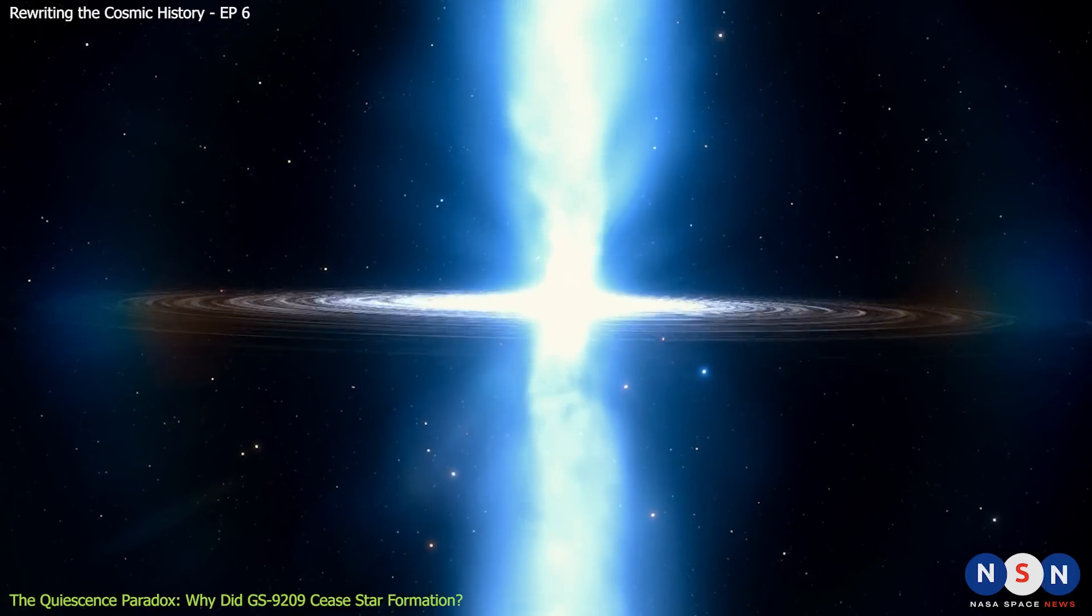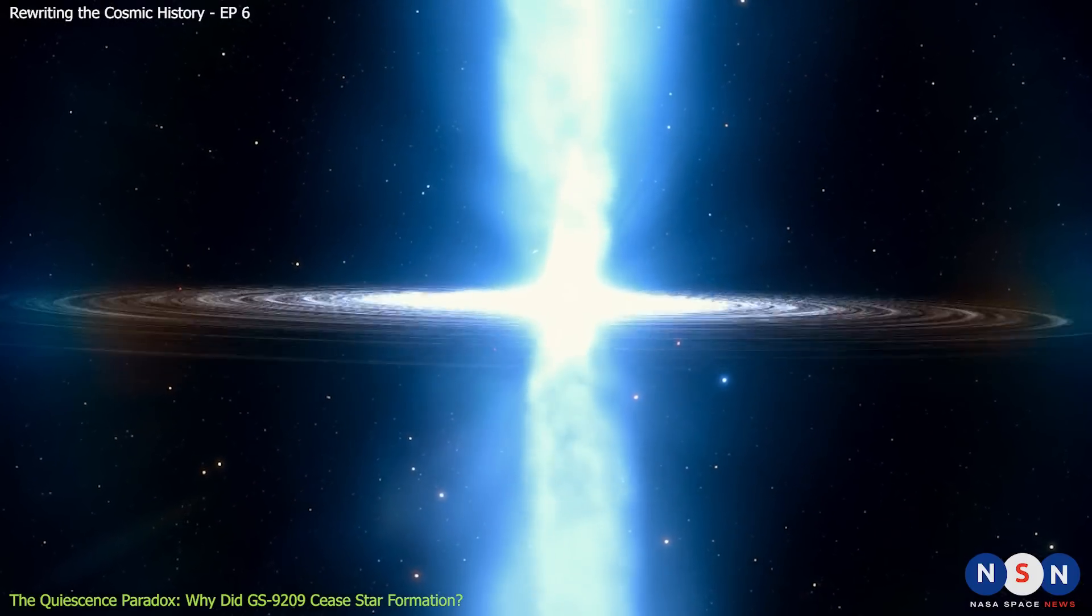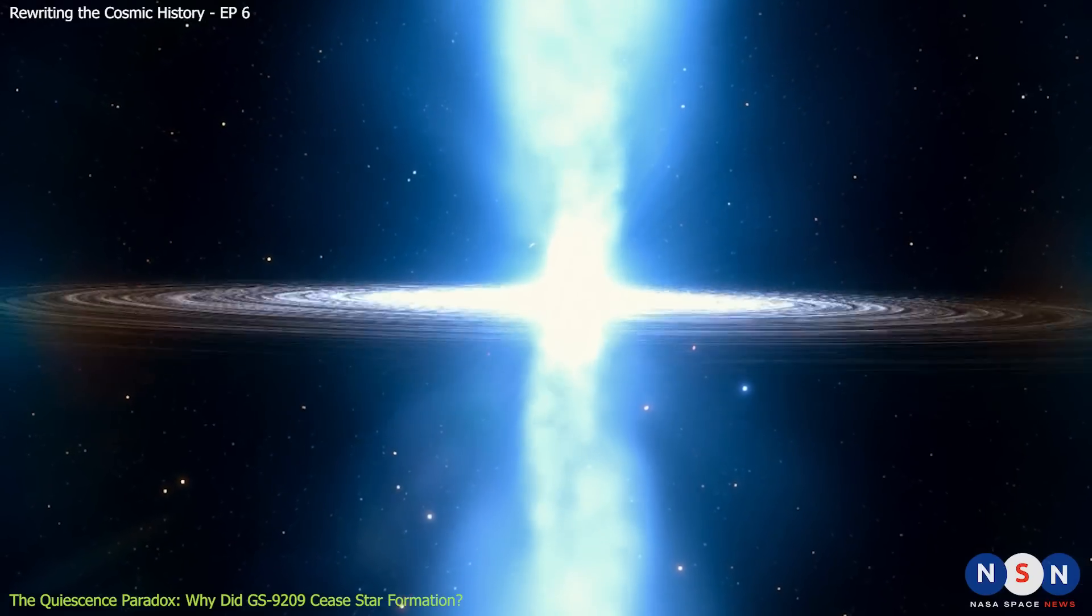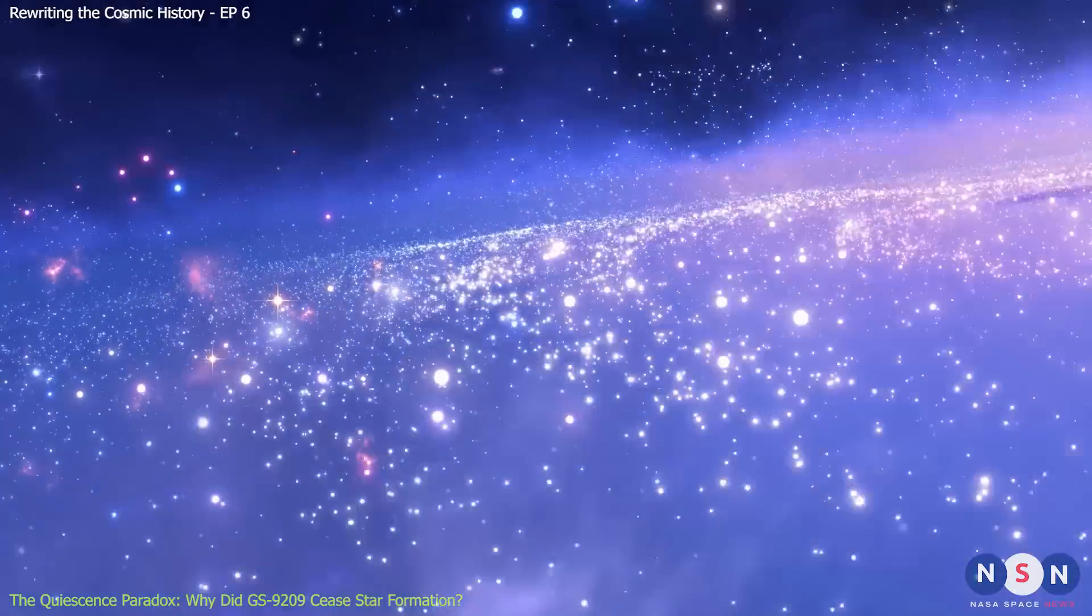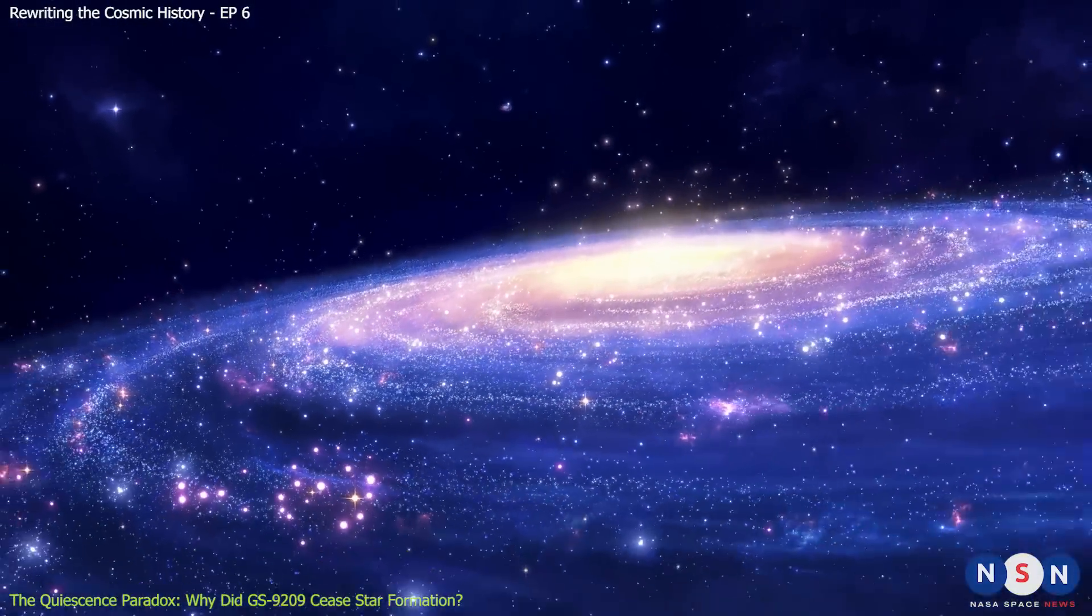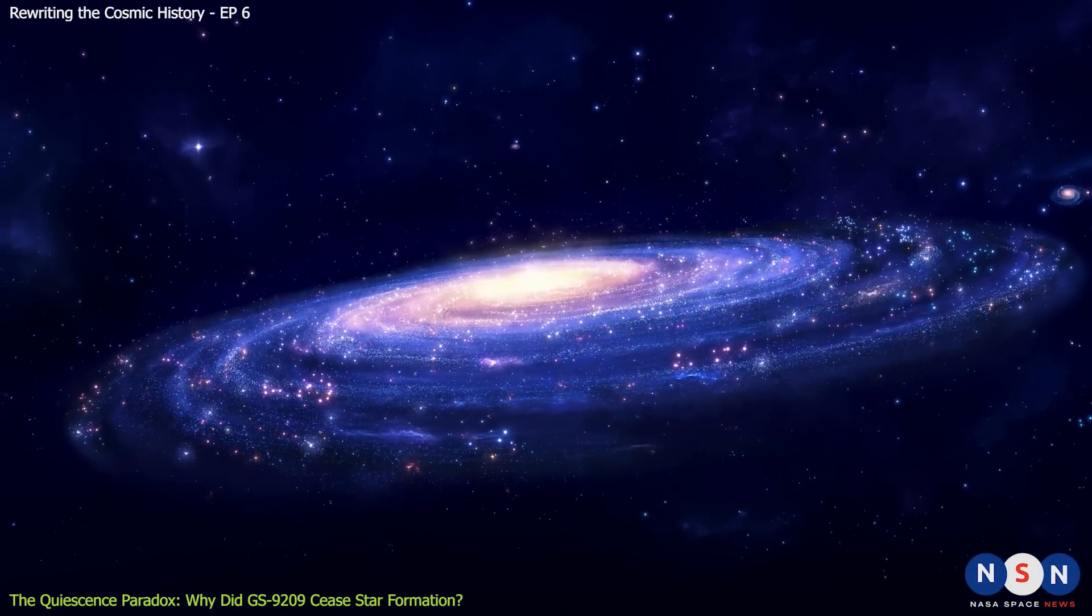The growth of supermassive black holes releases huge amounts of high-energy radiation, which can heat up and push gas out of galaxies. This could have caused star formation in GS 9209 to stop, as stars form when clouds of dust and gas particles inside galaxies collapse under their own weight.